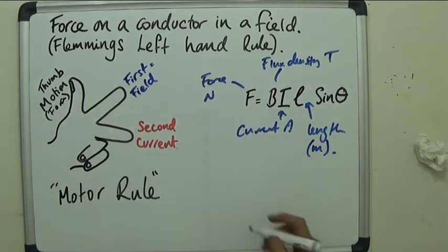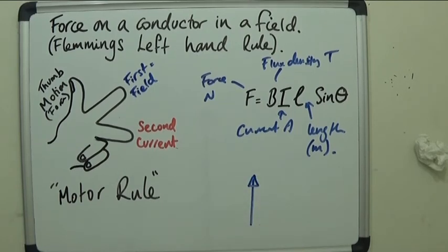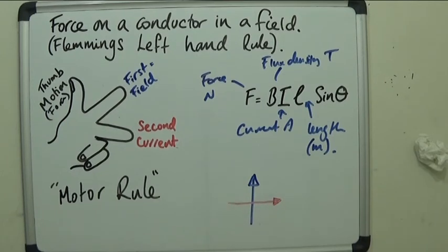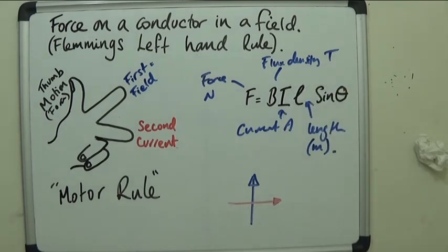So, if we think now, let's imagine fields acting in that direction, current flowing in that direction, this would give us a situation where sin of 90 is 1. And so, this is the optimum condition, we get the most force.